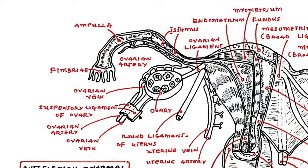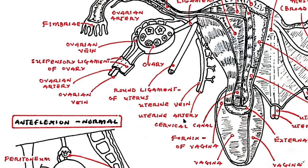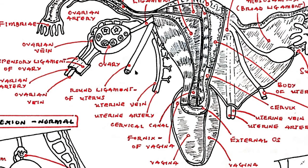The ovary is thus considered an intraperitoneal organ. The ovaries are supplied by the ovarian arteries and drained by the ovarian veins. The round ligament of the uterus originates at the uterine horns in the parametrium; it maintains the anteversion or forward-bending position of the uterus, especially during pregnancy. It is supplied by the artery of the round ligament, also known as Sampson's artery.